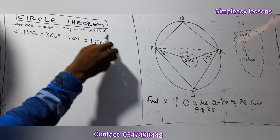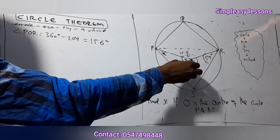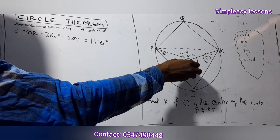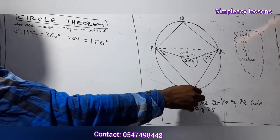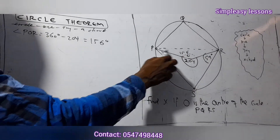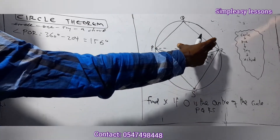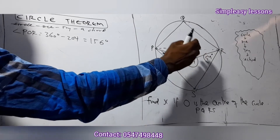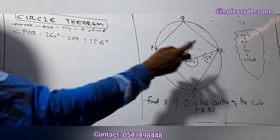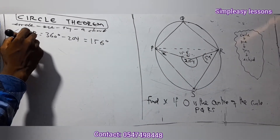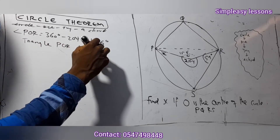Now we 'Try' — triangle. Is there a triangle? Yes, we have two triangles here: one triangle moves toward the center and another toward the circumference. We tackle the triangle at the center first. Triangle POR ends at the center, so it's an isosceles triangle.